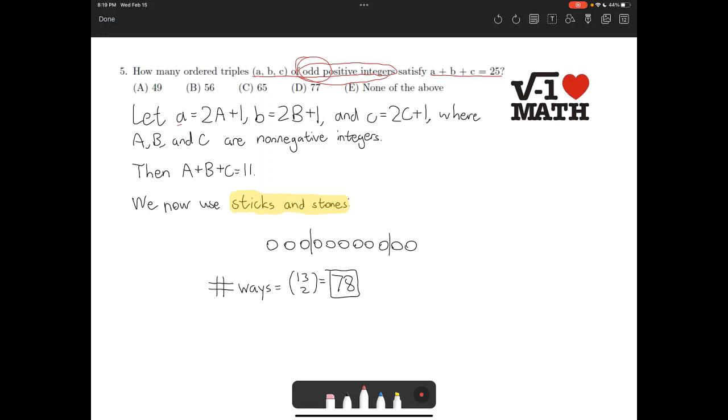Let lowercase a equal capital 2A plus 1, lowercase b be equal to capital 2B plus 1, and similarly for c, where capital A, capital B, and capital C are non-negative integers.